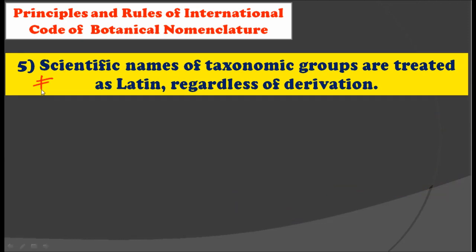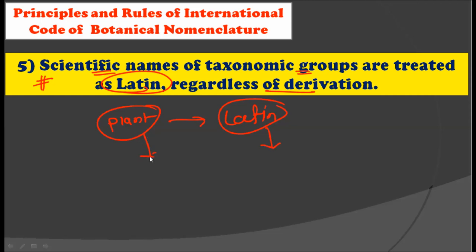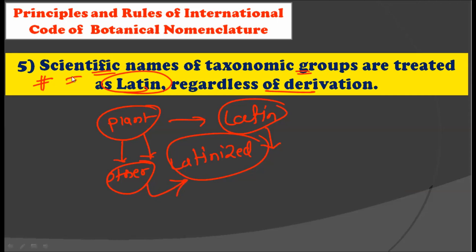The fifth rule is that the scientific names of taxonomic groups are treated as Latin regardless of their derivation. Every scientific name given to a plant should be in Latin, and if a plant name has been given in some other language, that name should be latinized.